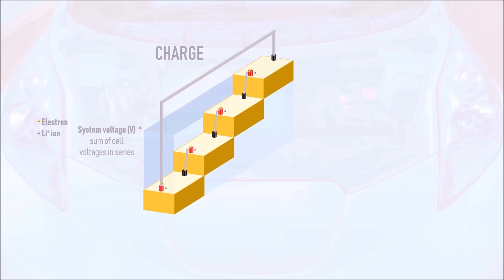The power being delivered by the pack can be calculated using the formula P equals IV, where P is the power in watts, I is the current in amps, and V is the voltage in volts.